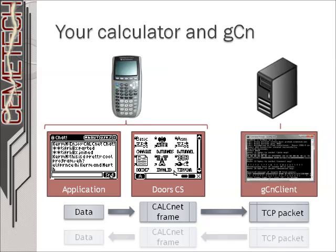When it sends the data out of its link port, the GCN client running on a connected computer catches that data, further encapsulates it in a TCP packet, and sends it out over the Internet to the GCN hub.